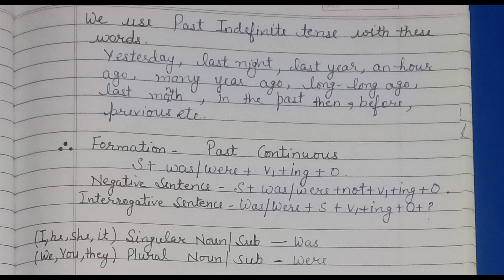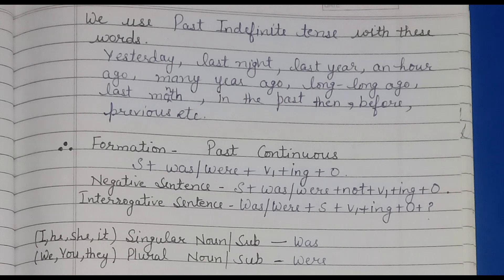Next part is past continuous. Its formation is subject plus was/were plus V1 plus -ing plus object. In negative sentences: subject plus was/were plus not plus V1 plus -ing plus object. In interrogative sentences: was/were plus subject plus V1 plus -ing plus object plus question mark. In singular noun or subject, we use 'was'.